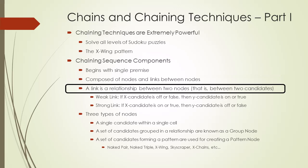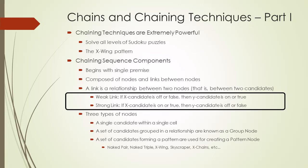A link is a relationship between two nodes. Most of the time, a link is a relationship between two candidates in two different cells. A link can also occur between two different candidates in the same cell. The two most common relationships are weak and strong links.